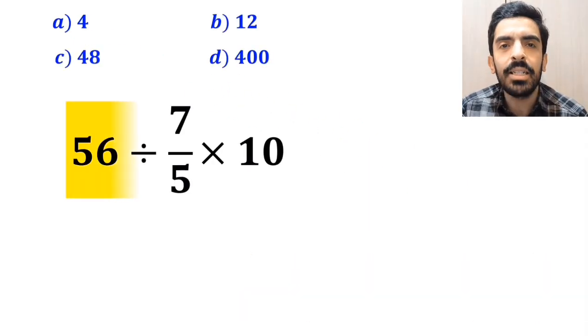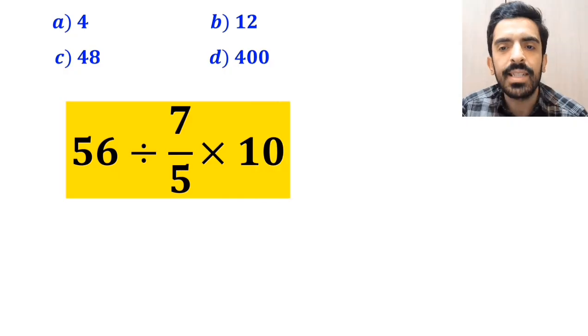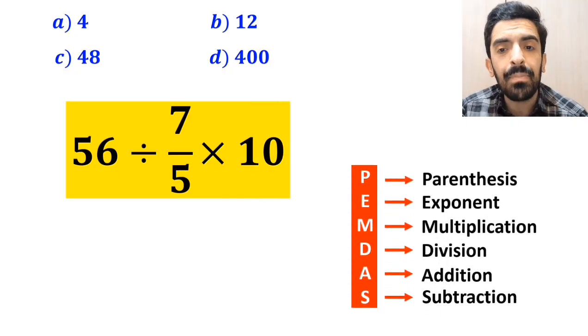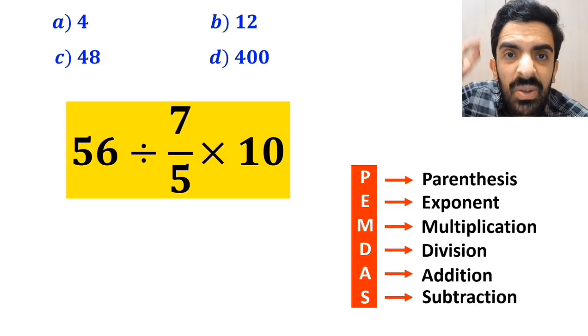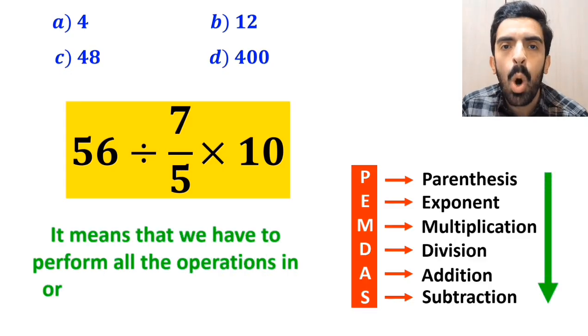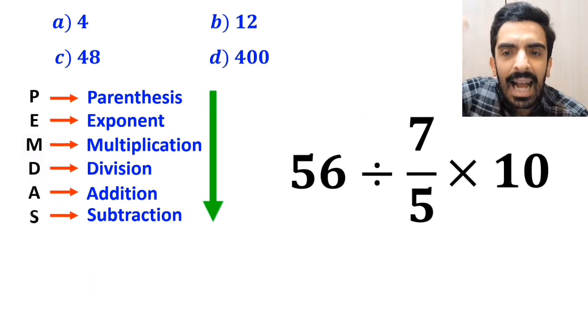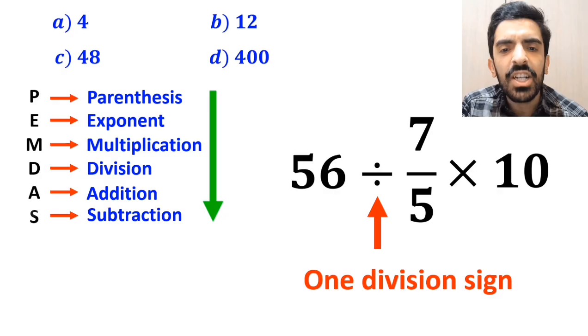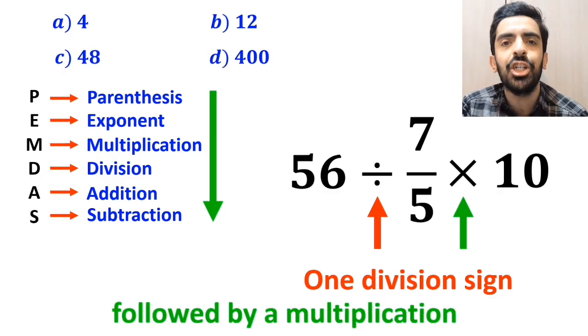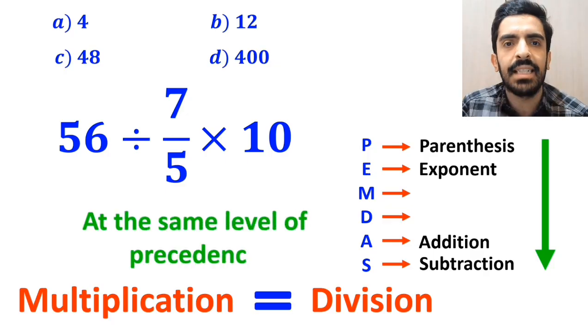Alright, now let me explain step by step how we should solve this expression properly. To solve this question, we need to follow the PEMDAS rule exactly as I've shown on the screen. It means that we have to perform all the operations in order from top to bottom. Okay, as you can see on the screen, in this expression, we have one division sign followed by a multiplication sign. It's very important to note that multiplication and division are at the same level of precedence.